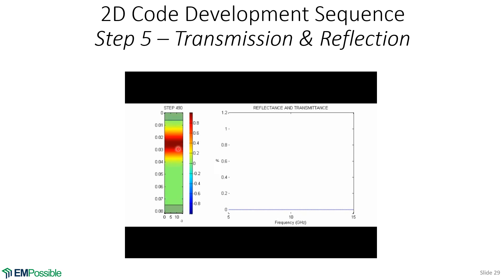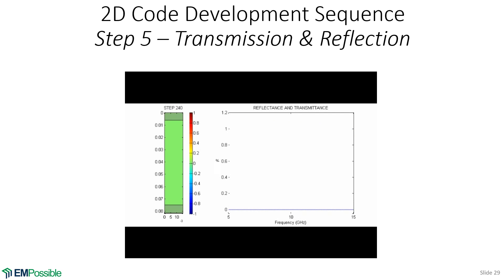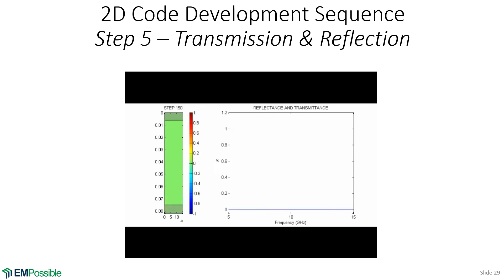Now we add calculation of transmittance and reflectance, injecting the source near the top to utilize the whole grid for simulating the device. Before adding any device, we simulate air — we should see 100% transmission and 0% reflection. I always recommend simulating nothing first as a benchmark. Then the very last step is to add the actual device.